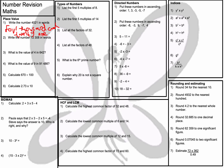Question number two: write the number 72,308 in words. It's SEVENTY TWO THOUSAND, THREE HUNDRED and EIGHT.